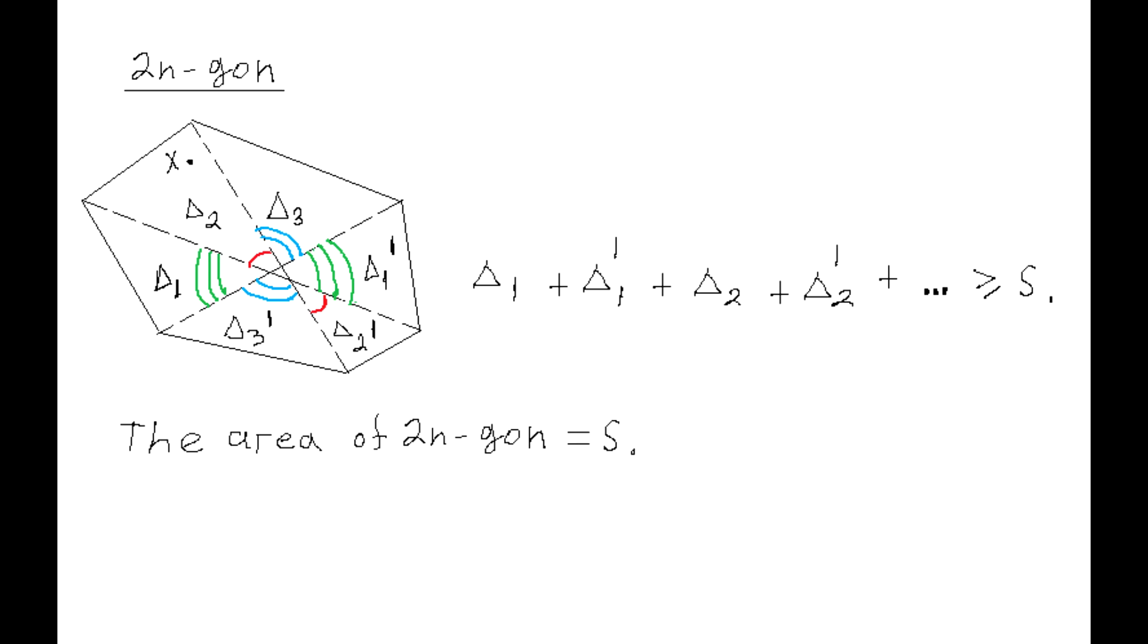This implies that the sum of the areas of all triangles, triangle 1 and triangle 1', etc., is not less than the area S of the 2N-gon. The fact that the given polygon is convex guarantees that all such triangles are contained in the interior of the given polygon.